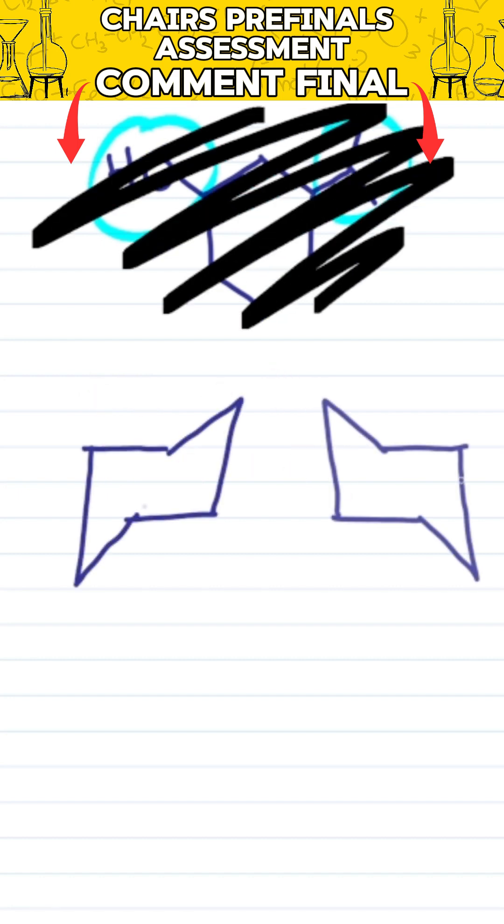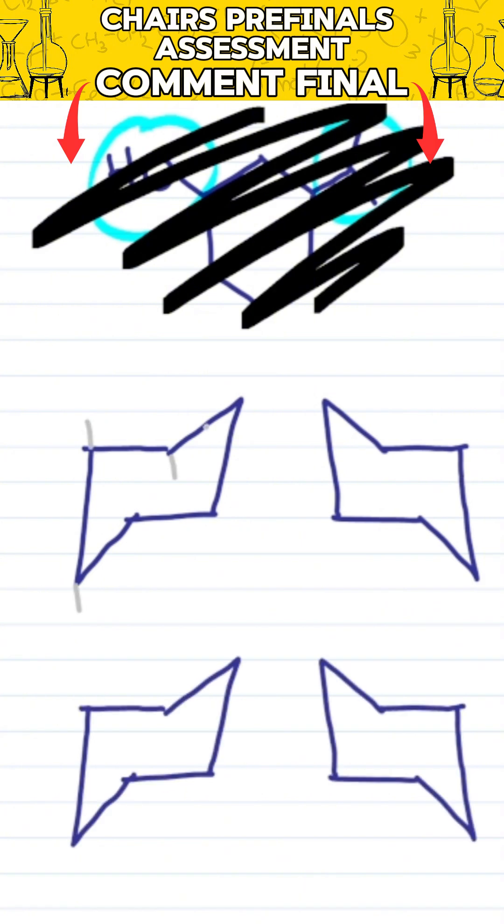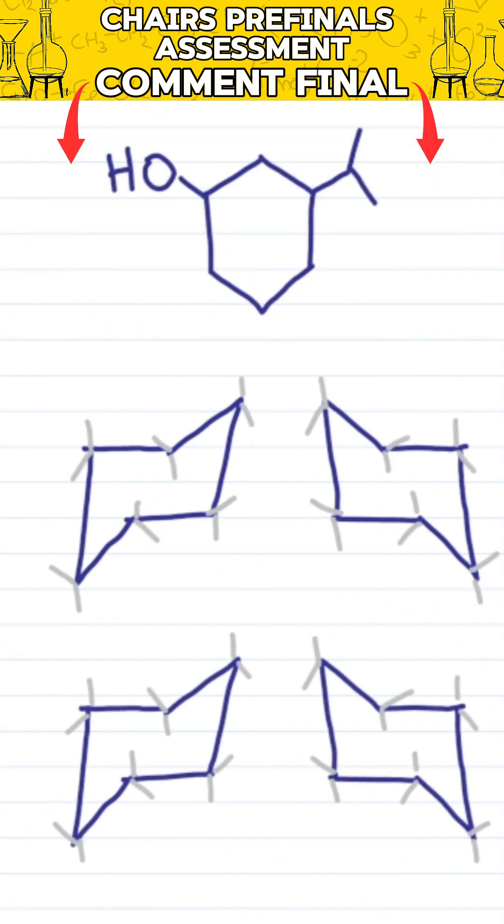Here we go. It's faster and easier to draw the chairs first. Mark your axial, mark your equatorial, number your initial ring, and then fill in the substituents.